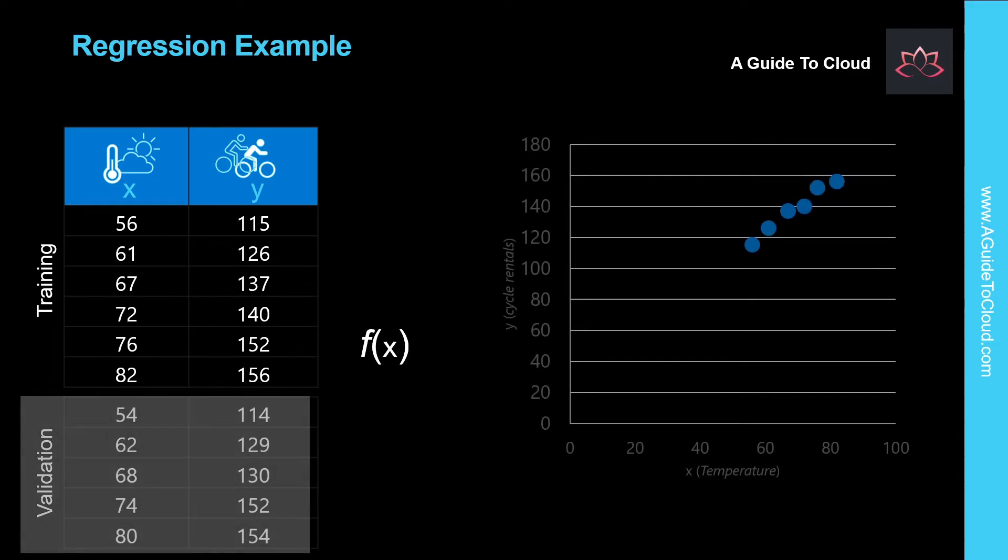When we find a function, we'll need to validate it with data for days where we already know the number of rentals so we can see how well it predicts. As you notice, I split this table into training and validation subsets. Looking at the plot, you can see a trend where higher temperatures tend to correlate with more rentals. We can fit a line between these plotted points that describes this correlation. We can use this line to work out a calculation that produces Y from X. The point where the line intersects with the Y-axis is around 35. So the function that operates on X to find Y is 35 plus 1.5 times X.